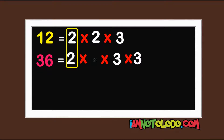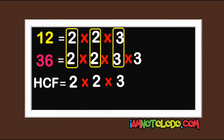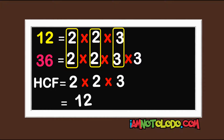2 is here, 2 is here — circle it. 3 is here, 3 is here — circle it. So our HCF equals 2 times 2 times 3. So 2 times 2 is 4, times 3 is 12. So the highest common factor is 12. Do you understand? Good.